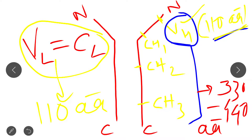This is the basic concept about the variable region and constant region in the immunoglobulin structure. Combining yesterday's and today's lecture, you now have a clear idea about the immunoglobulin structure, the antigen binding site, the heavy and light chain bonds, and the variable and constant regions.